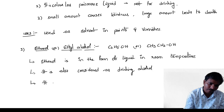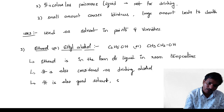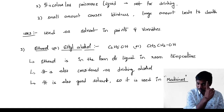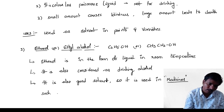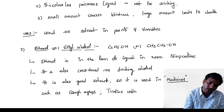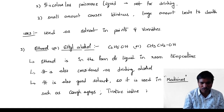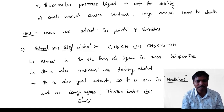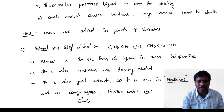Ethanol is also a good solvent. It is used in medicines such as cough syrups — that is, tonics — and tincture iodine. The alcohol which is used in medicines is ethyl alcohol.